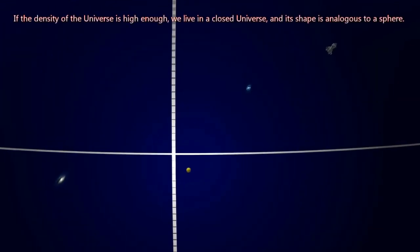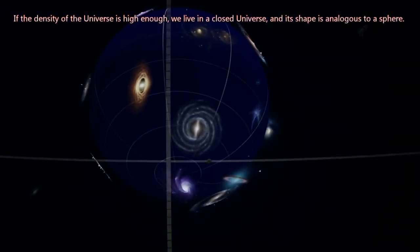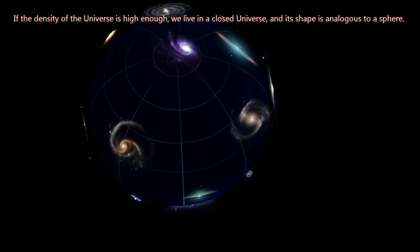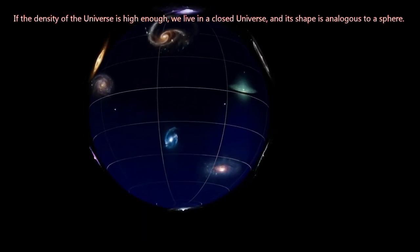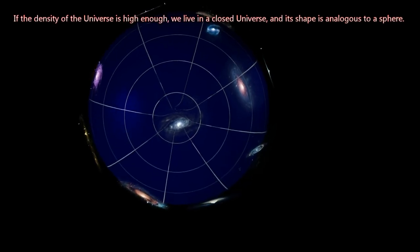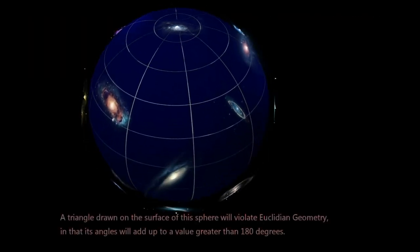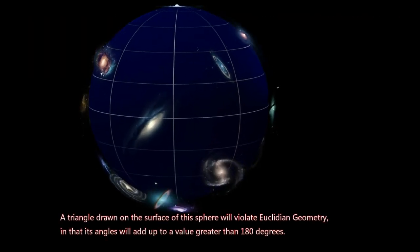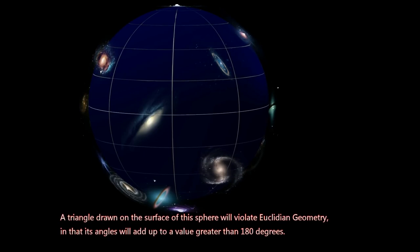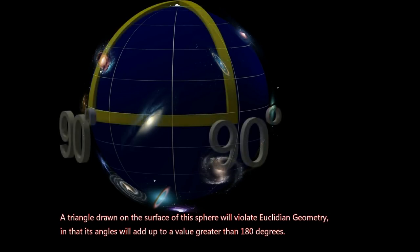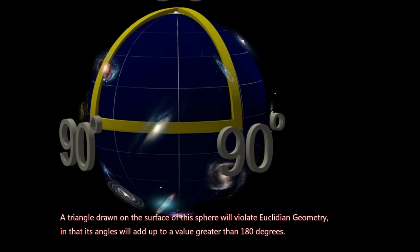If the density of the universe is high enough, we live in a closed universe, and its shape is analogous to a sphere. A triangle drawn on the surface of this sphere will violate Euclidean geometry, in that its angles will add up to a value greater than 180 degrees.